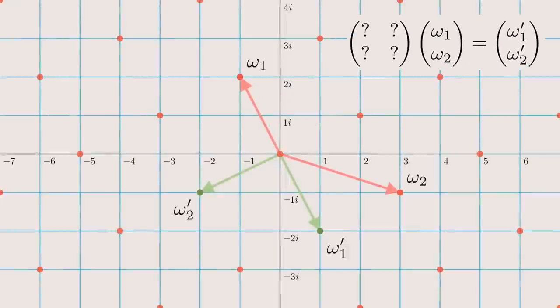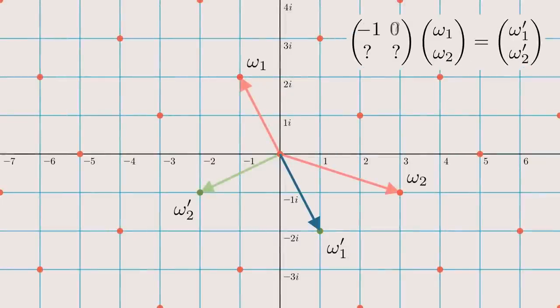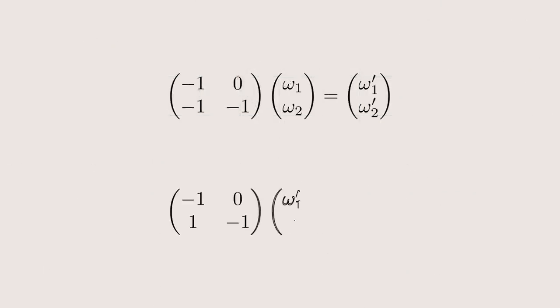The transformation between these two bases can be described by a matrix. In this case, this number is minus 1 times omega 1 plus 0 times omega 2, while this number is minus 1 times omega 1 plus minus 1 times omega 2. You can see that both basis vectors of our new base lie on lattice points of the old one. They are a combination of integer multiples of omega 1 and omega 2. This matches the fact that all entries of our matrix are integers.